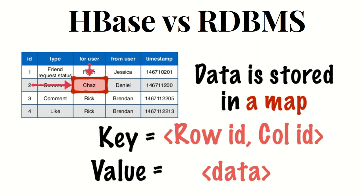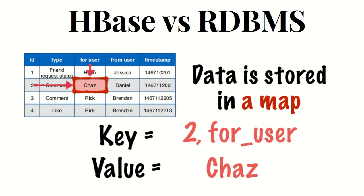In HBase, the intersection of row ID and column ID is the key, and the value is the data. So the row ID is '2', column ID is 'for_user', and the value is 'CHAAS'. This is the difference between HBase and RDBMS. RDBMS stores data in row form — it is a row-oriented database — but HBase is a column-oriented database, just to reduce latency.